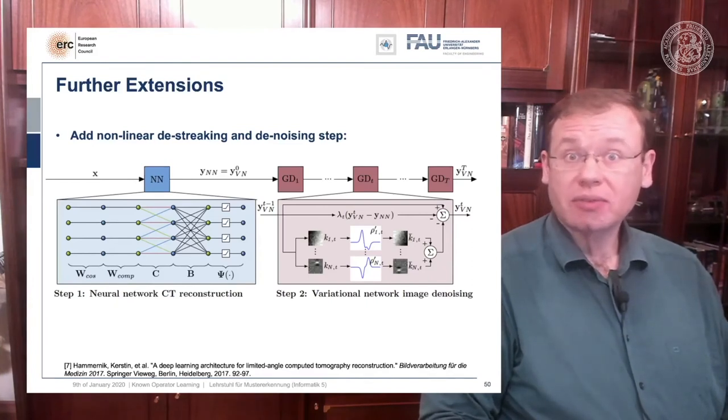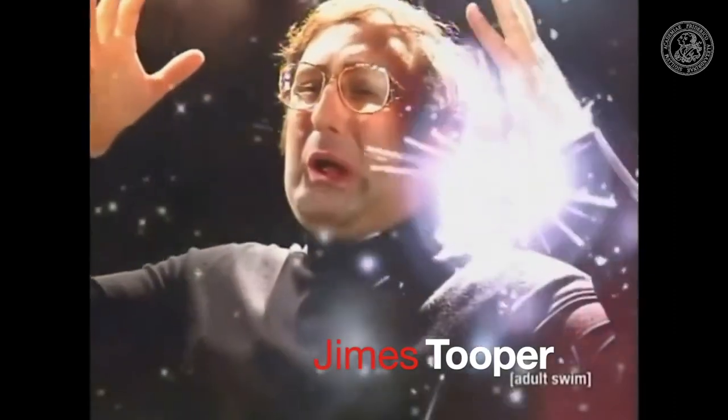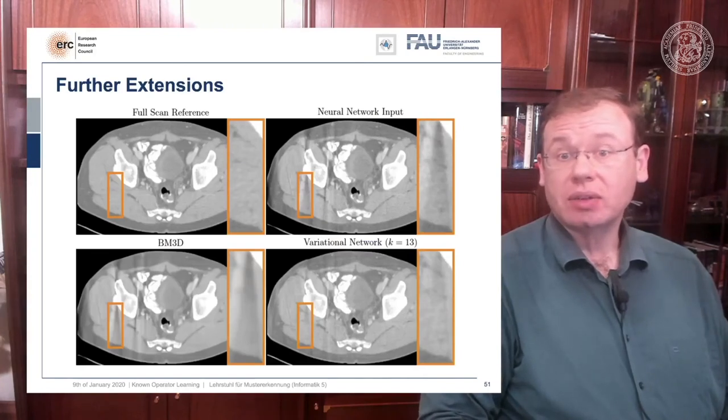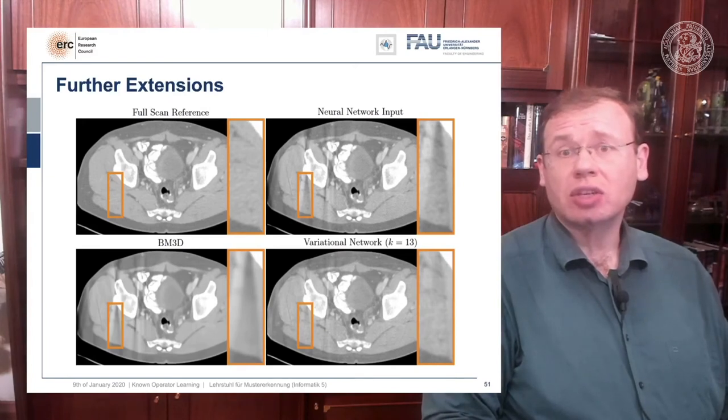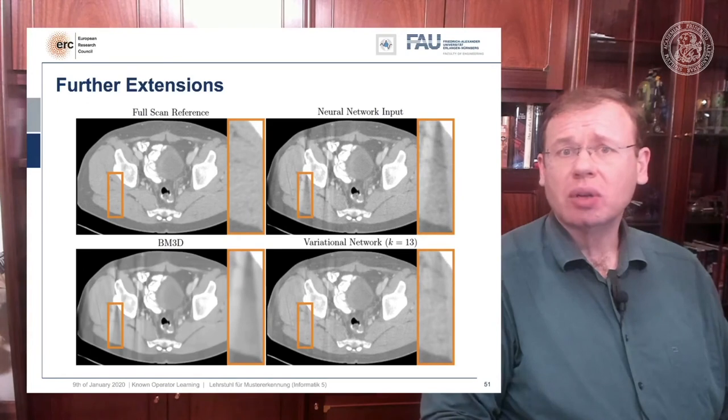Meaning that we can also get this new sparsifying transform and interpret it in a traditional signal processing sense. Let's look at some results. Here you can see that if we take the full scan reference, we get really an artifact-free image. Our neural network output with this reconstruction network that I showed earlier is improved, but it still has these streak artifacts that you see on the top right.